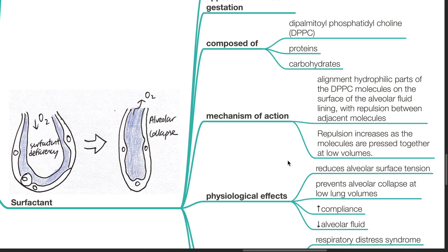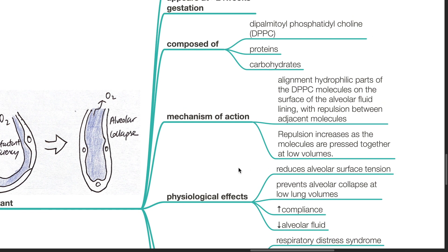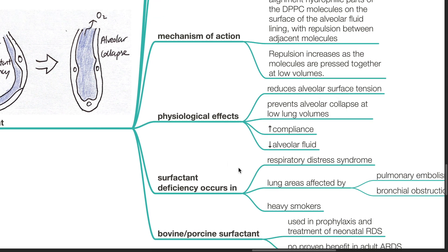Mechanism of action of surfactant. There is alignment of the hydrophilic parts of the DPPC molecules on the surface of the alveolar fluid lining, resulting in repulsion between adjacent molecules. Repulsion increases as the molecules are pressed together at low volumes. Physiological effects of surfactant include reduction in alveolar surface tension, prevention of alveolar collapse at low lung volumes, resulting in increased lung compliance and decreased alveolar fluid.